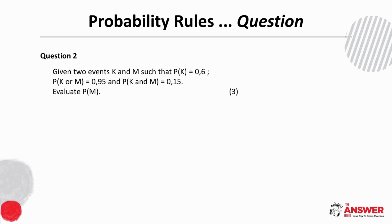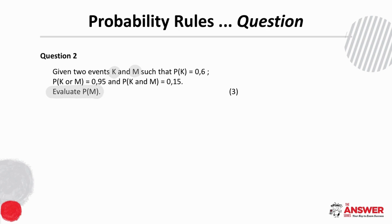On to question 2. This time we have two events K and M, and we are given the probability of K, the probability of K or M, and the probability of K and M. We are asked to evaluate the probability of M. Pause the video to give this one a go.